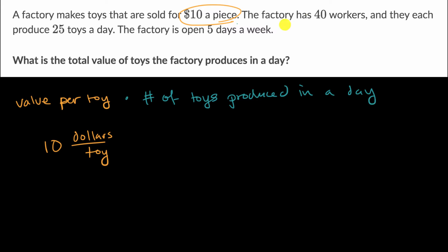And then they do tell us, or they give us the information that we need to figure out how many are produced in a day. We have 40 workers and they each produce 25 toys a day. So the amount that's produced in a day is going to be 40 workers times 25 toys per worker.